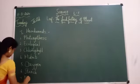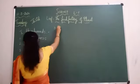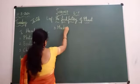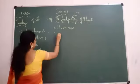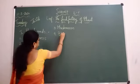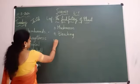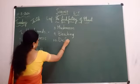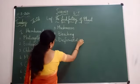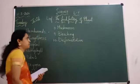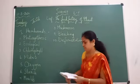6th one is starch. 7th one is moulds. 8th one is mushroom. 9th one is bleaching. 10th one is deforestation.